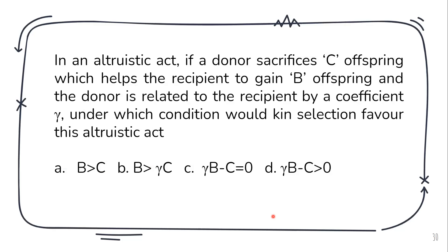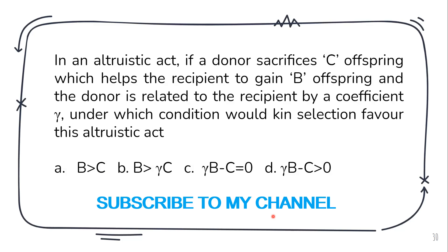The final question states: in an altruistic act, if a donor sacrifices c offspring which helps the recipient gain b offspring, and the donor is related by gamma (r = γ), under what condition would kin selection favor this act? This is a direct application of Hamilton's rule: r × b > c, which rearranges to r × b − c > 0.